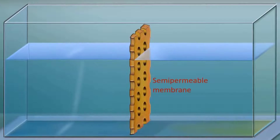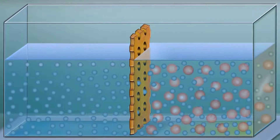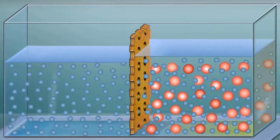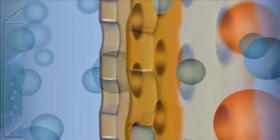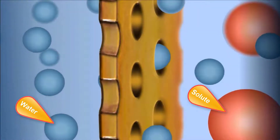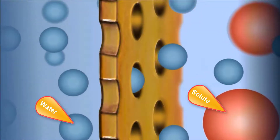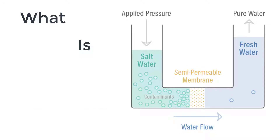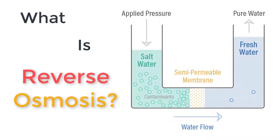To summarize what we've learned so far, osmosis is the movement of water molecules from an area of low solute concentration to one of high solute concentration. So what is reverse osmosis? In reverse osmosis, the opposite of this process occurs.